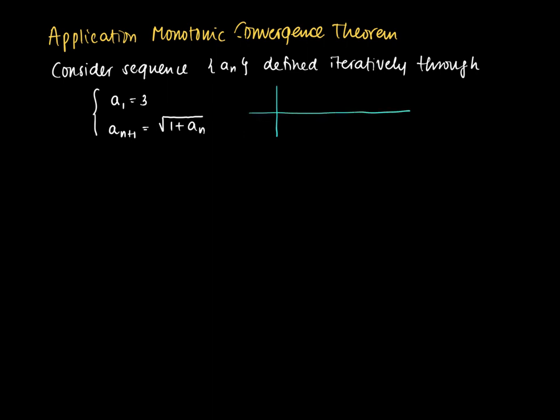So first we have the index n and the corresponding element aₙ. So first n=1 we have 3, and the value n=2 is the square root of 1 plus a₁ is the square root of 4 which equals 2.